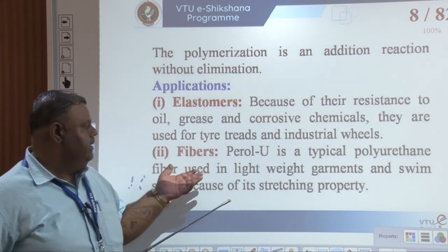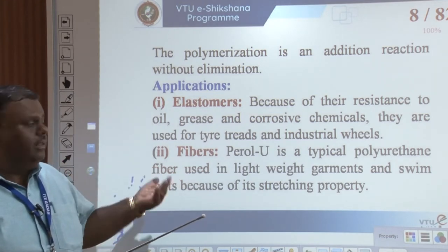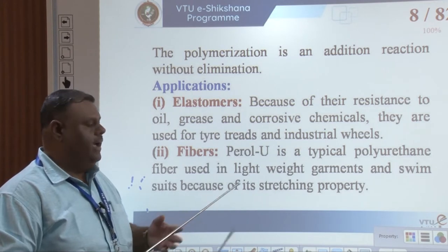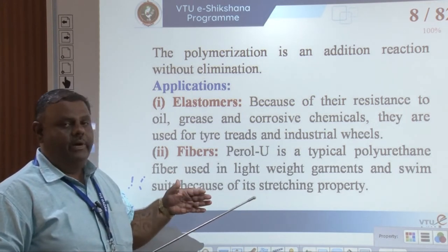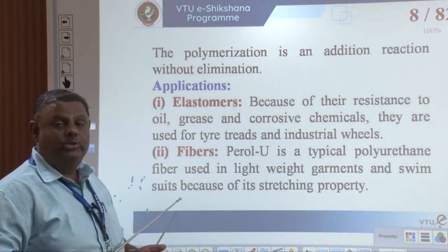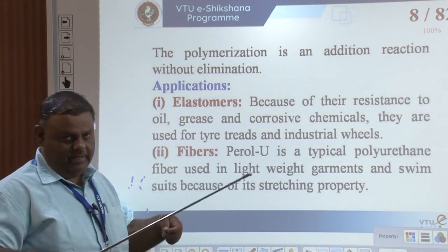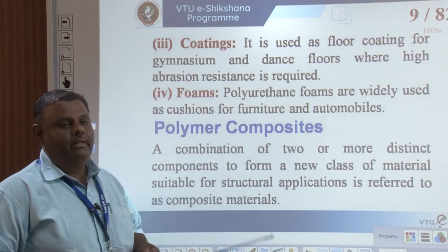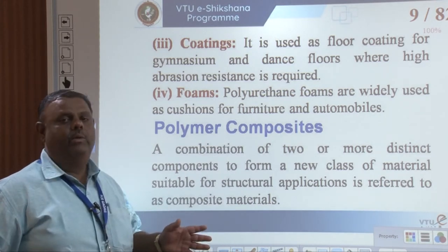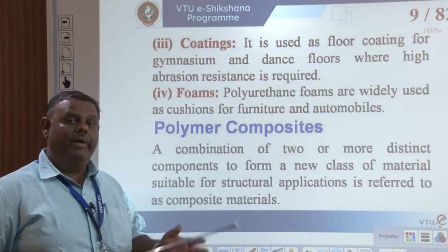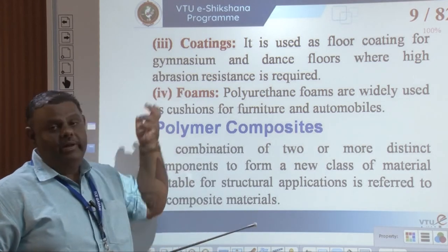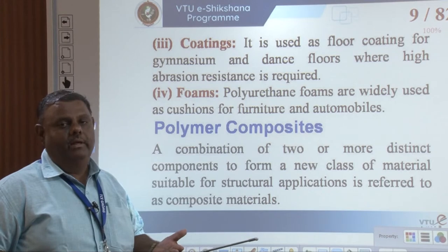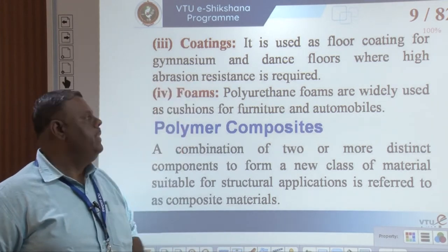Polyurethane can also be made in the form of fiber. Perlon U is a typical polyurethane fiber used as lightweight garments, particularly in the sports field — these are used to make swimming suits, and they have excellent stretching properties. Polyurethane coatings are applied over surfaces where dancing performances are made, because these coatings act as anti-jerking coats — slipping will not occur over surfaces where these coatings are applied.